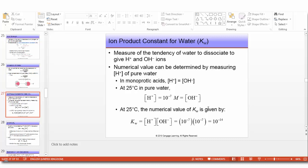The numerical value can be determined by measuring H+ in pure water. In pure water at 25 degrees centigrade, H+ molar concentration equals OH- molar concentration, and both equal 10 to the minus 7 molar. The numerical value of Kw is 10 to the minus 7 times 10 to the minus 7, which equals 10 to the minus 14. The quantity Kw is dimensionless.